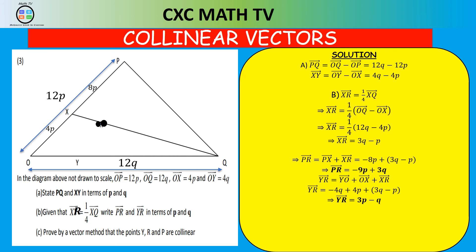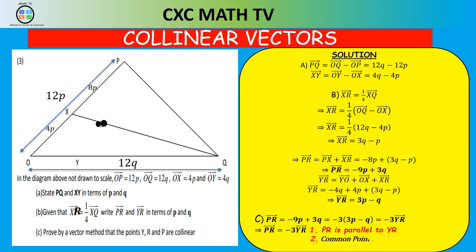Part C: prove that Y, R and P are collinear. Vector PR = −9p + 3q = −3(3p − q) = −3 × YR. So PR is a scalar multiple of YR with constant −3, meaning PR is parallel to YR. There is also a common point R. Hence Y, R and P are collinear.